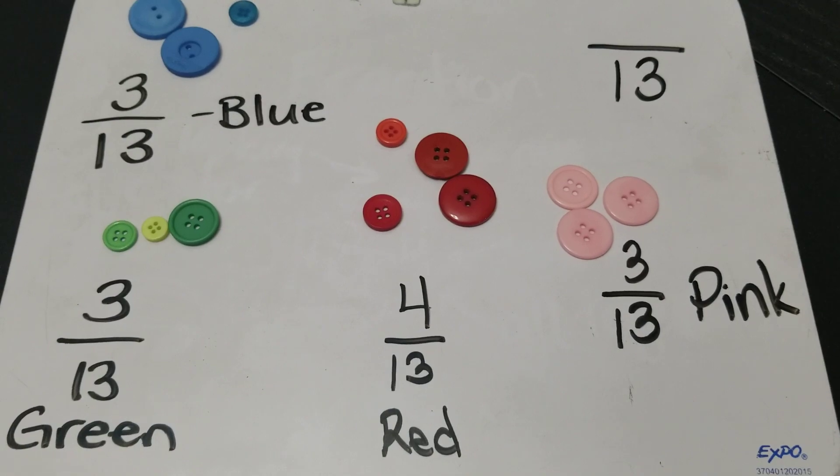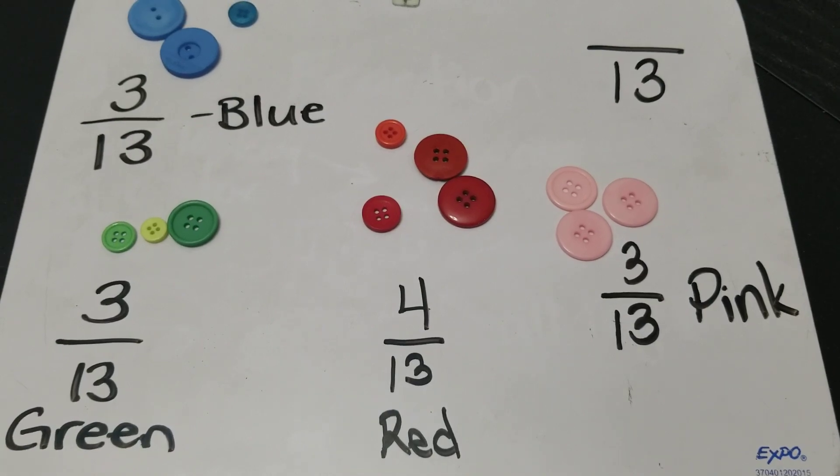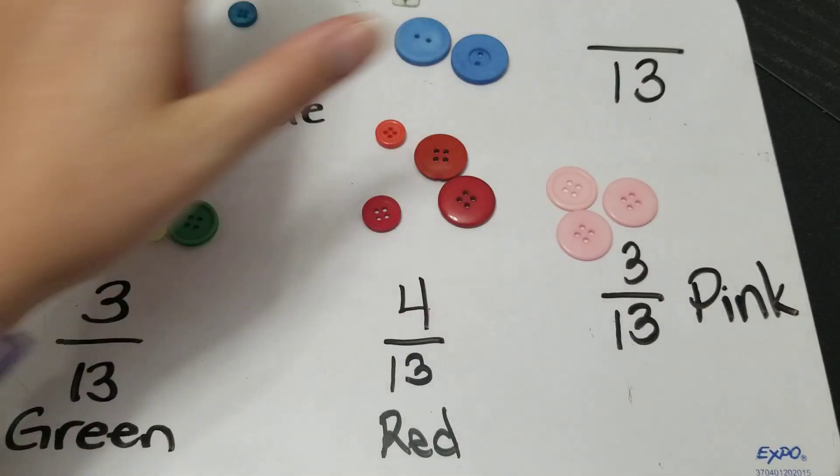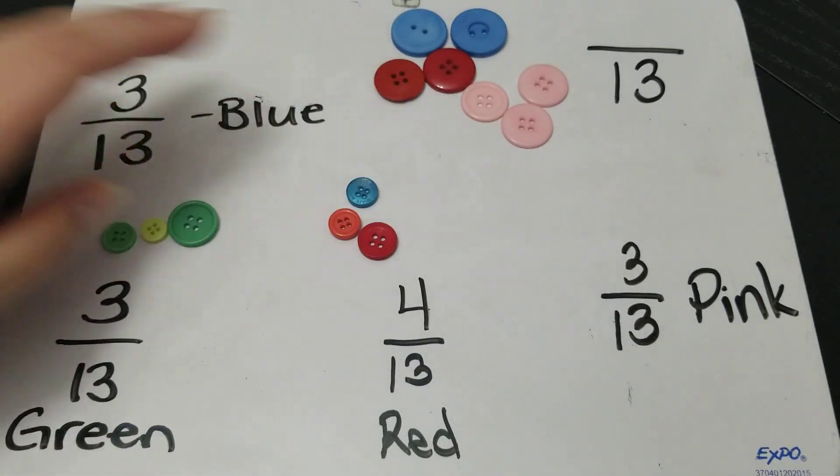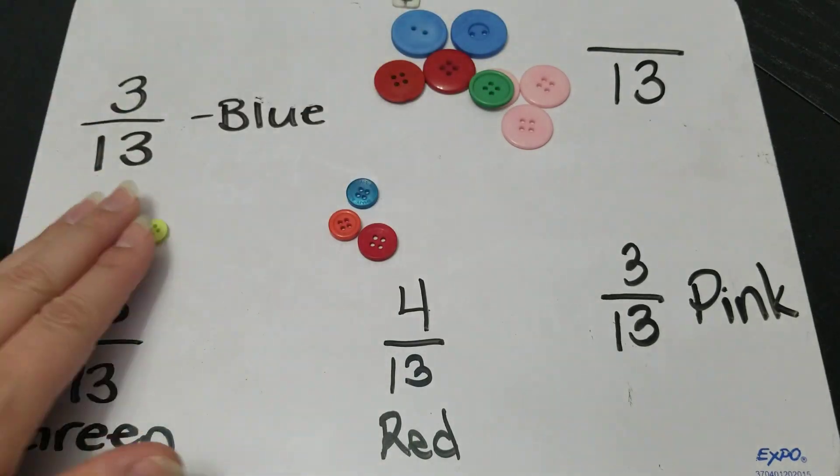I didn't have to organize them by color. I could have organized them by size and decided that my buttons were all the big ones went together and all the little ones went together. This one's a hard one. I think those are the same size.